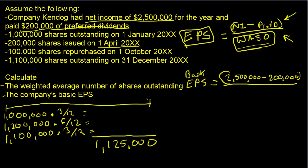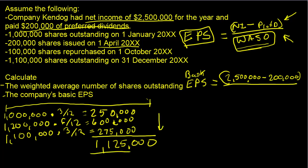When we do the calculation, the total weighted average shares outstanding comes to 1.125 million shares. Breaking it down: one-fourth times 1 million equals 250,000; one-half times 1.2 million equals 600,000; and one-fourth times 1.1 million equals 275,000. Adding these up gives us the weighted average shares outstanding.